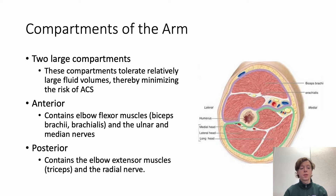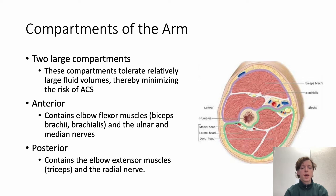The upper arm has two large compartments that tolerate relatively large fluid volumes, so it is uncommon to see ACS in this region. The anterior compartment contains the elbow flexor muscles and the ulnar and median nerves. The posterior compartment contains the elbow extensor muscles and radial nerve.